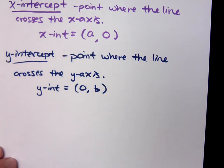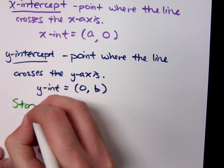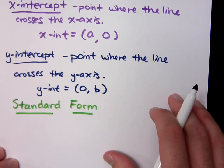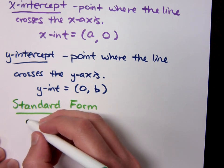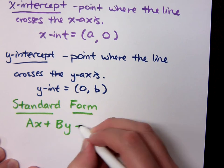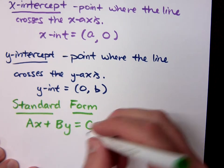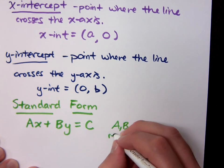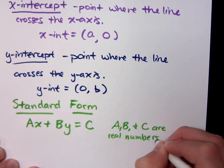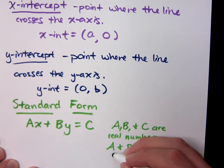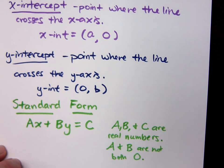This is very useful when we start looking at some special forms for linear equations. One of those main forms is the standard form. The standard form is Ax plus By equals C. The conditions are that A, B, and C are all real numbers, and A and B are not both 0. The coefficients for x and y can each be 0, but they just can't both be 0 at the same time.